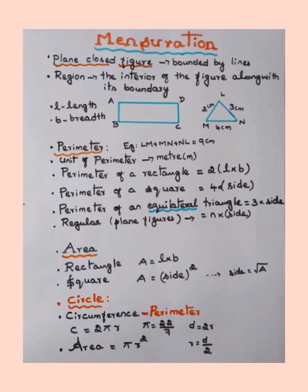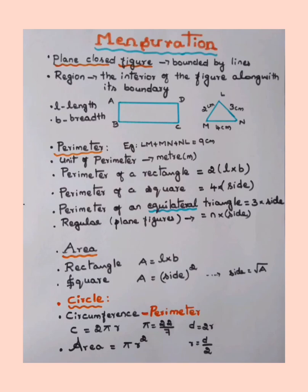In mensuration, we deal with measurements of length, area, volume, surface area, etc., of both plane figures and solid figures. Plane closed figures in geometry are bounded by lines — either straight lines or curved lines — in a plane. For solid figures, along with the two dimensions of length and breadth, we also look at volume.